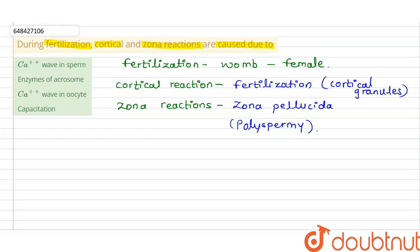And that reaction will take place because of the calcium plus plus, and that calcium plus plus of oocytes, and that will lead to these reactions of cortical and zona.